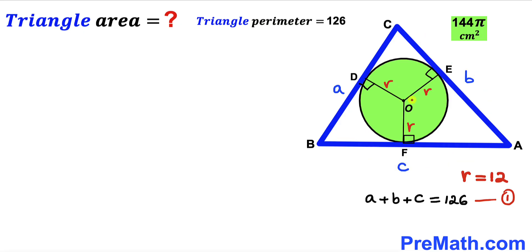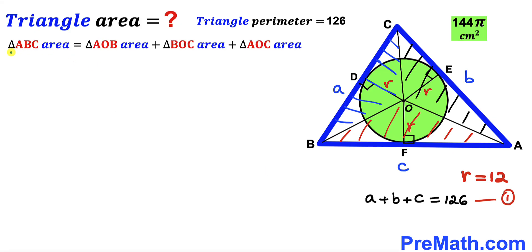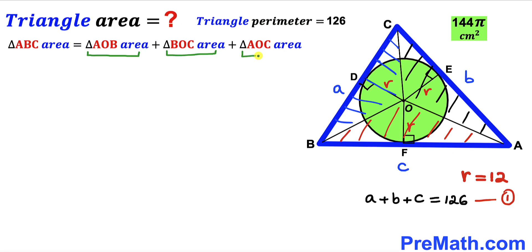Now I'm going to connect center O with vertices A, B, and C. As you can see, we get AO, BO, and CO, resulting in three triangles: triangle AOB, triangle BOC, and triangle AOC.